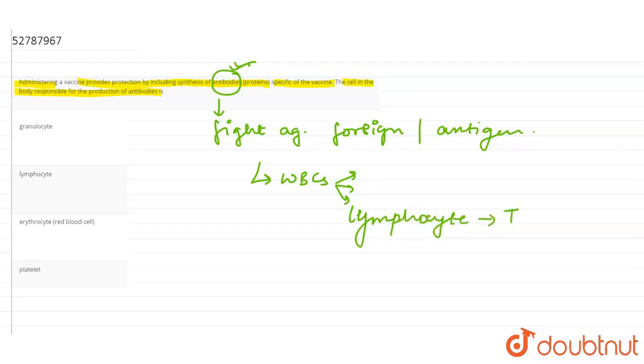Here, we call them T lymphocytes. We call them B lymphocytes. Okay.